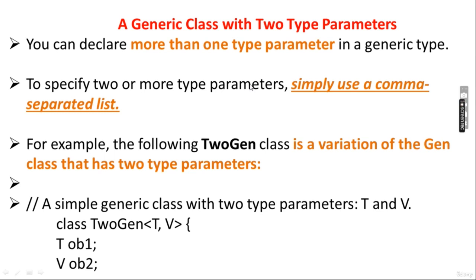Now we will move forward with the second topic: a generic class with two type parameters. You can declare more than one type parameter in a generic type. To specify two or more type parameters, simply use a comma-separated list. For example, the following two-generic class is a variation of the generic class we already created: class TwoGeneric<T, V>.